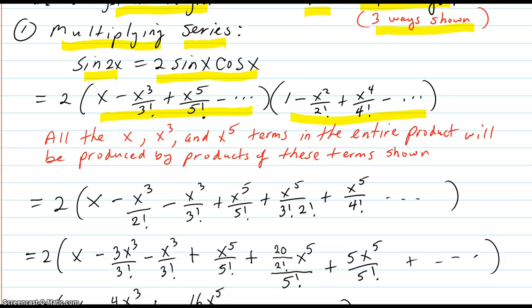So now we just need like three terms just to see if we can get a pattern. The terms shown here are enough to produce all the x terms, x³ and x⁵ terms for the entire product. And that is because the next one here is x⁷. When that multiplies by the lowest, you're going to get x⁷. So that's not going to be an x⁵ term.